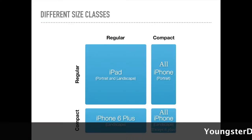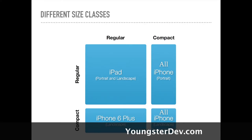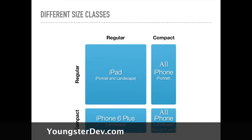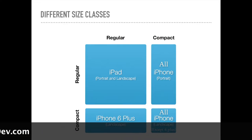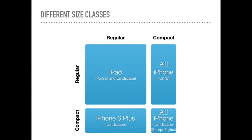So as you can see, we have four cases. The first case, on the top right, is all iPhones in portrait orientation — the class is regular height and compact width (regular compact). This includes iPhone 4, 4s, SE, 6, 6s, 7, and 7 Plus in portrait orientation.